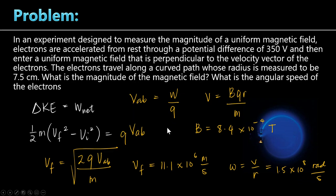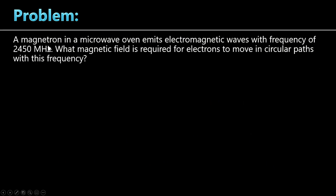Next problem. A magnetron — the device inside a microwave oven that creates the magnetic field — emits electromagnetic waves at a frequency of 2450 MHz. That's the 2.4 GHz band also used by Wi-Fi and Bluetooth. The question: what magnetic field is required for electrons to move in a circular path at that frequency?